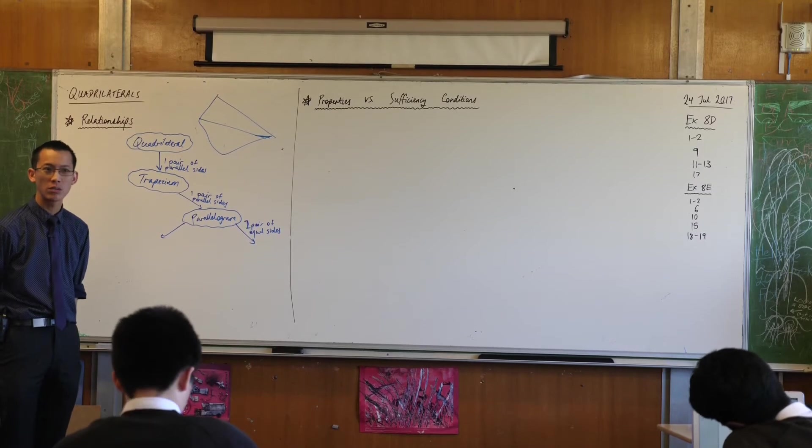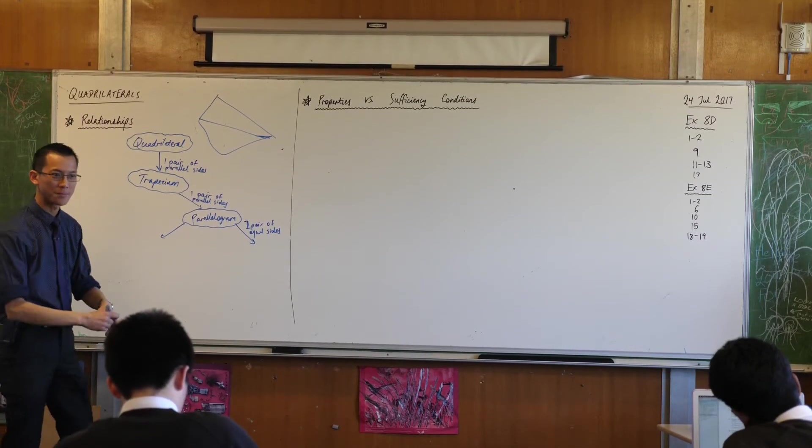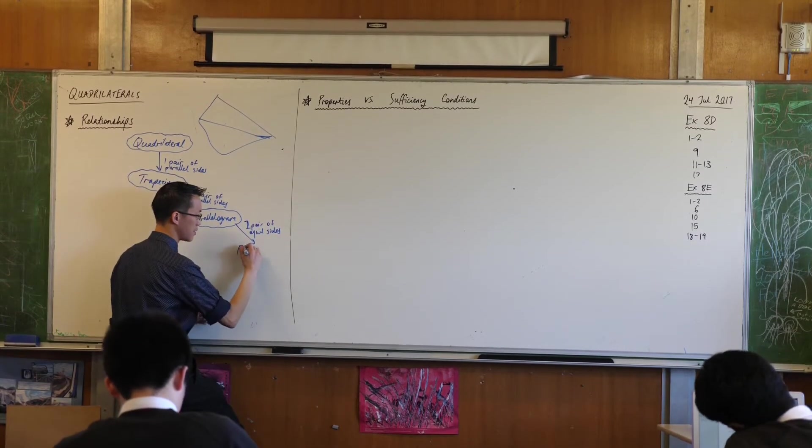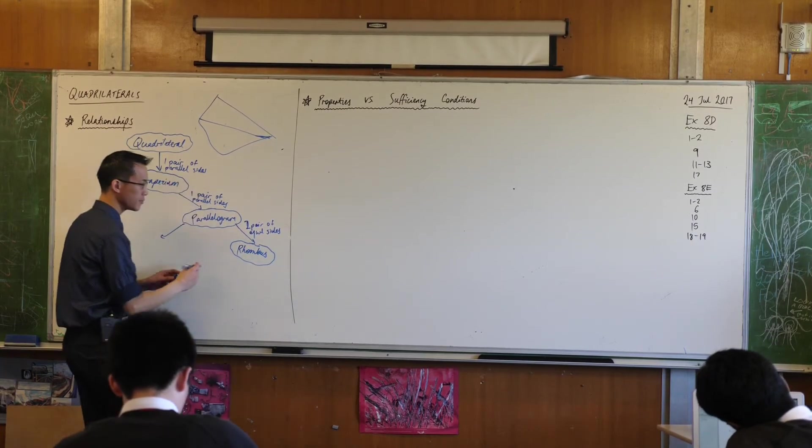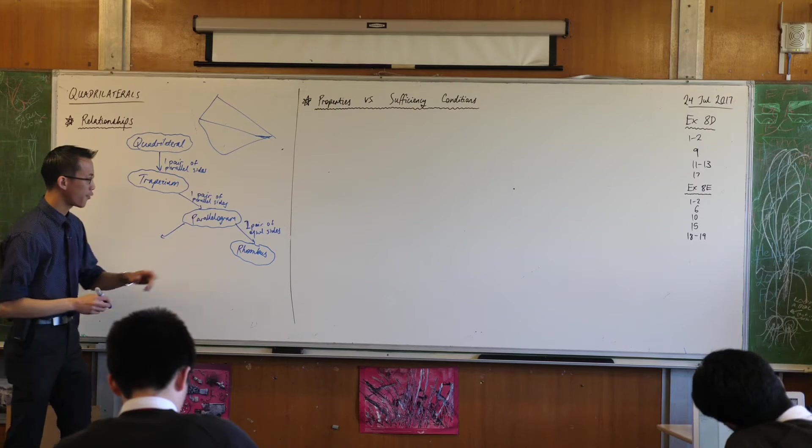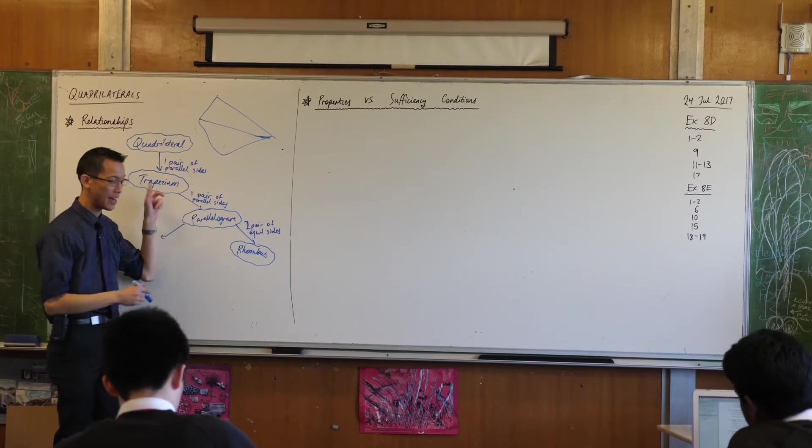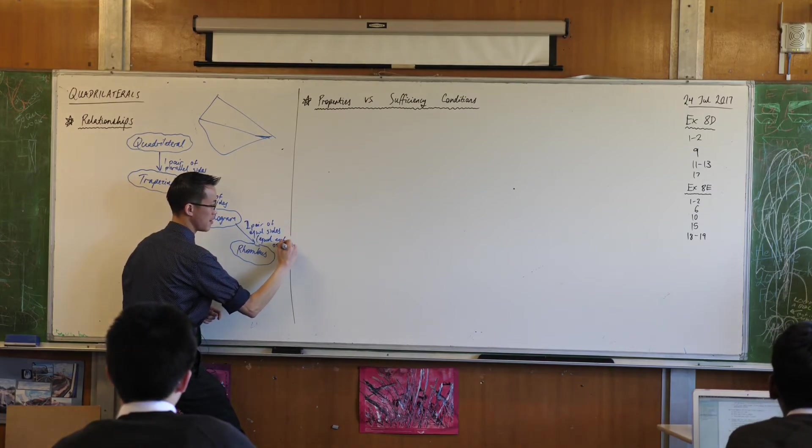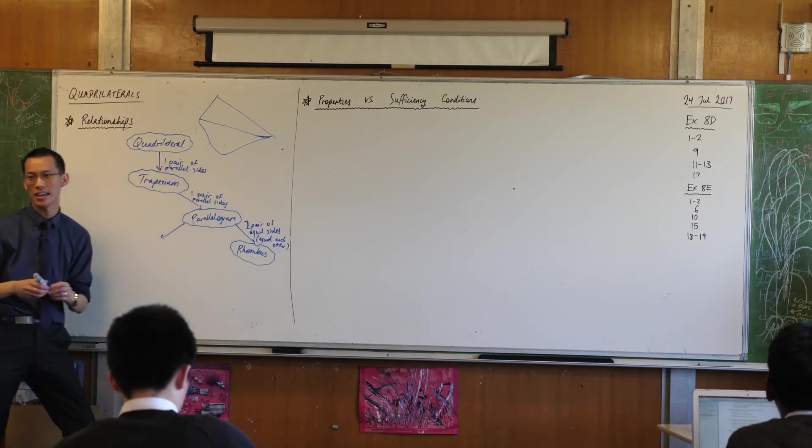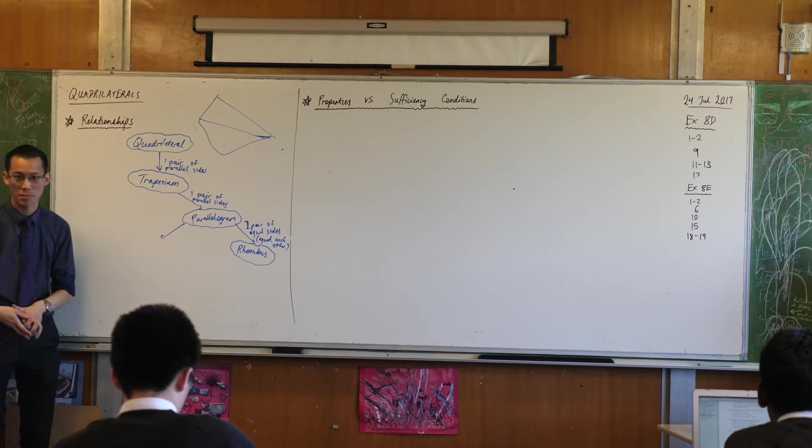If they're all equal to each other what kind of shape do I have? This is a rhombus isn't it? So if these two pairs of equal sides that I had before now equal each other, now all the sides are equal to each other, that's what makes it a rhombus.